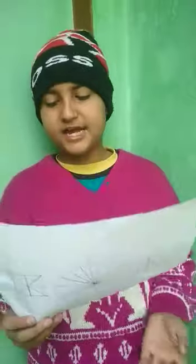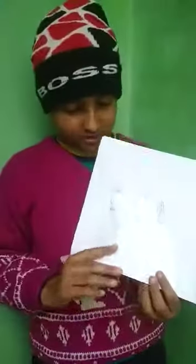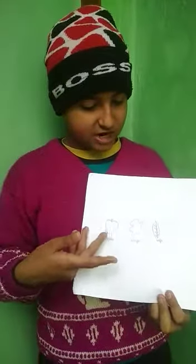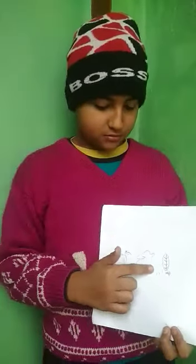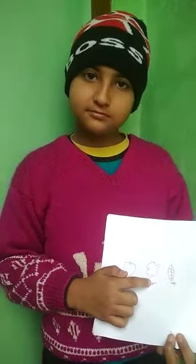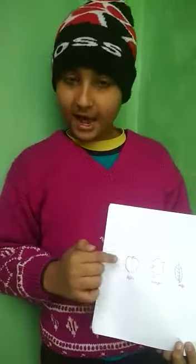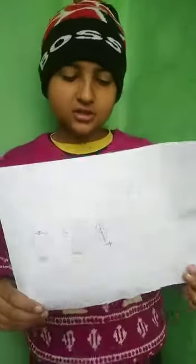Now I am telling you about unsymmetrical shapes. There are 3 shapes: leaf, ginger, and apple. These are not symmetrical shapes. Thank you and have a nice day.